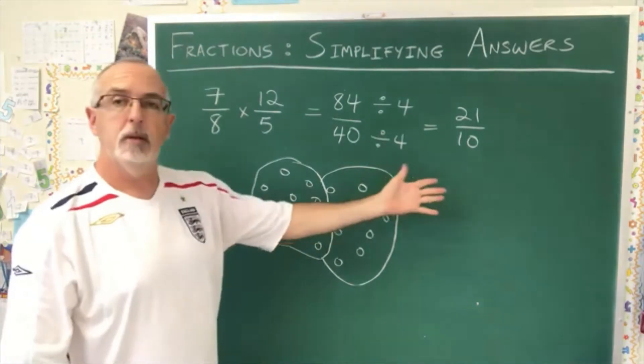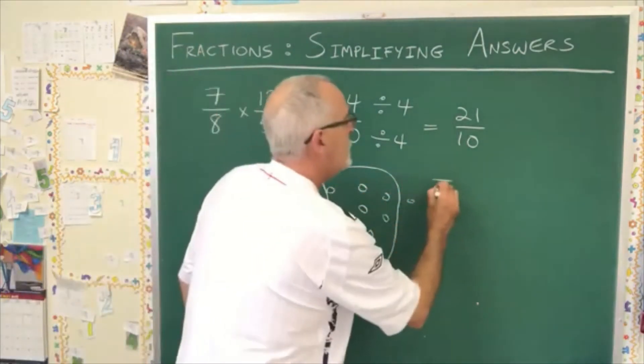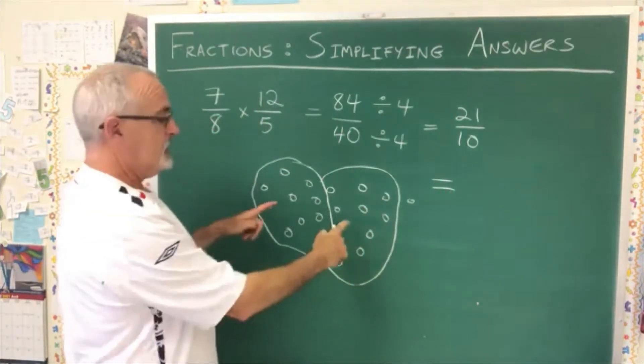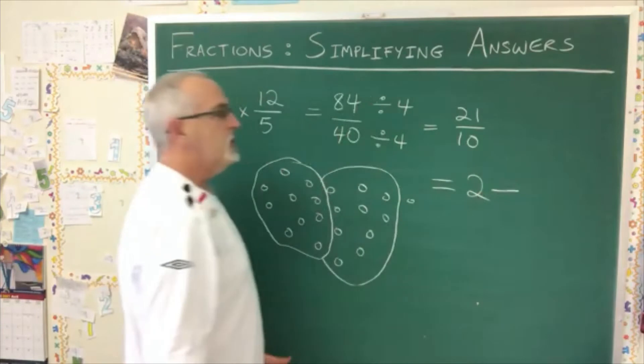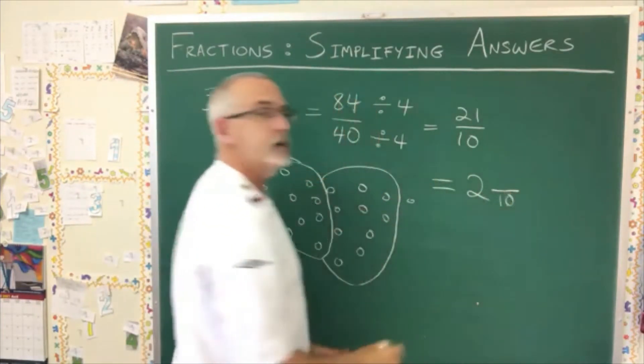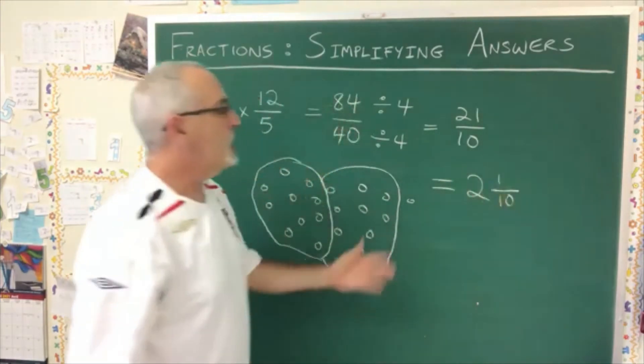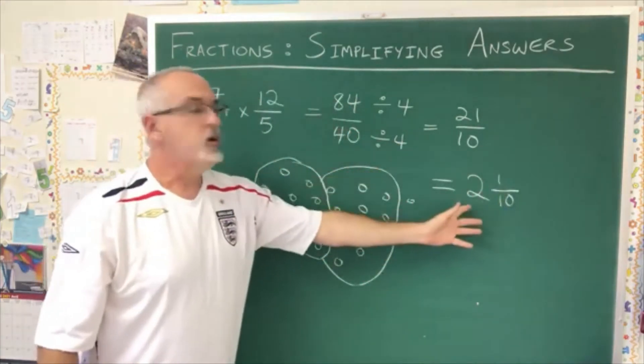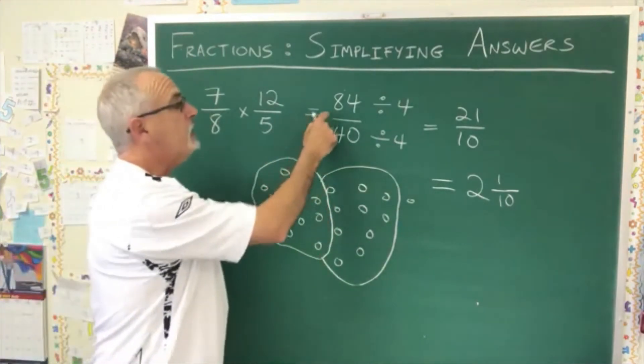And that's all we need to know to be able to give our final answer to this problem. 21 tenths has two groups of 10. So the big number is a 2. The 10 was a 10 up here. It stays a 10. And then the remainder is the new numerator. So 21 tenths is 2 and 1 tenth.